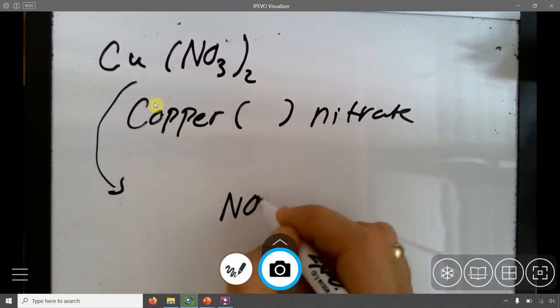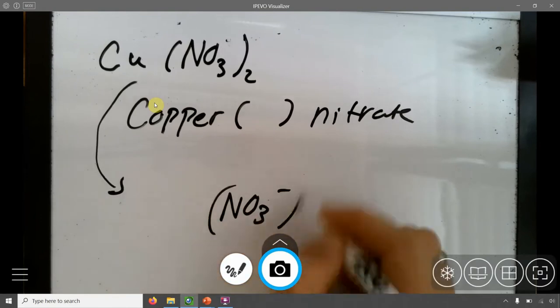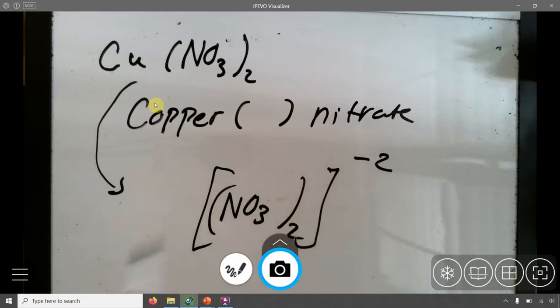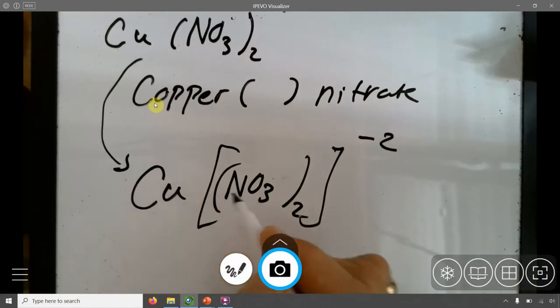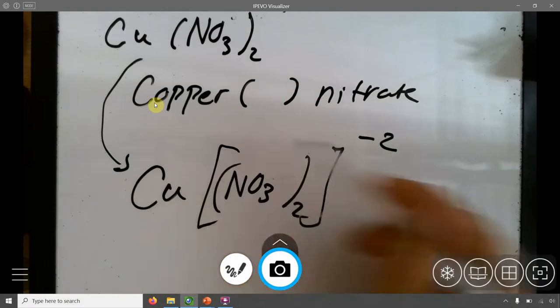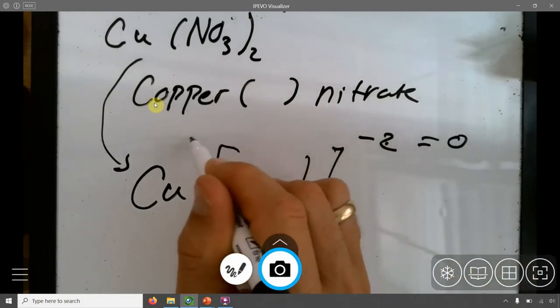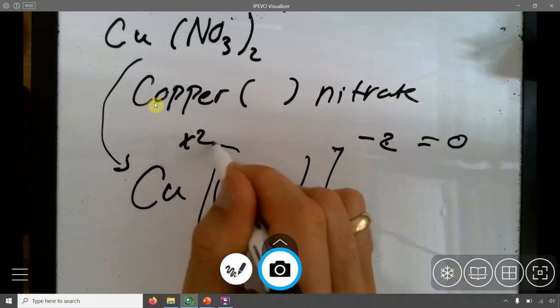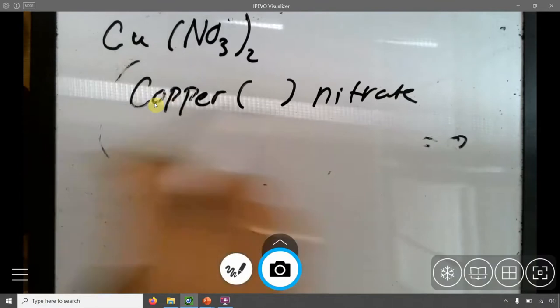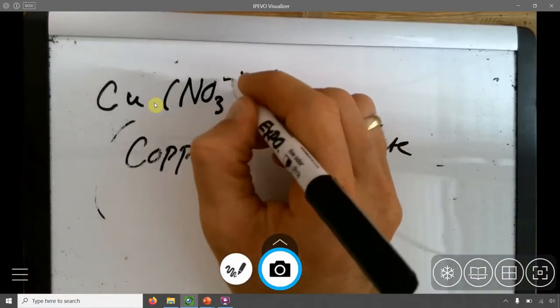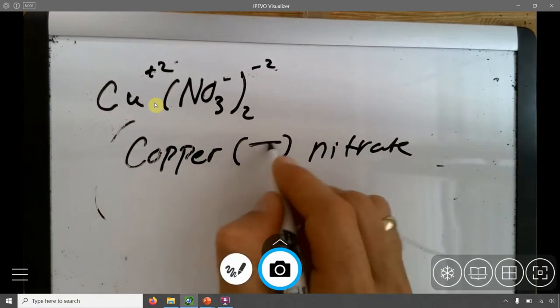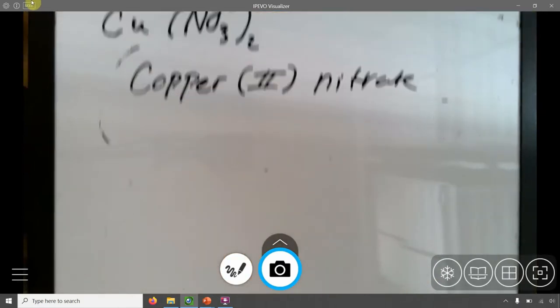I basically know that this entire thing is negative two. Since I have two of them, I basically know that this entire thing is negative two. When I smoosh copper with it, I know that copper has to have something that would make this go to zero. Negative two plus something to make it go to zero, so this has to be positive two. So I know now that copper is positive two. From here, this is negative one, this is negative two, this is positive two. So this entire thing is positive two, so I have to write copper two nitrate.